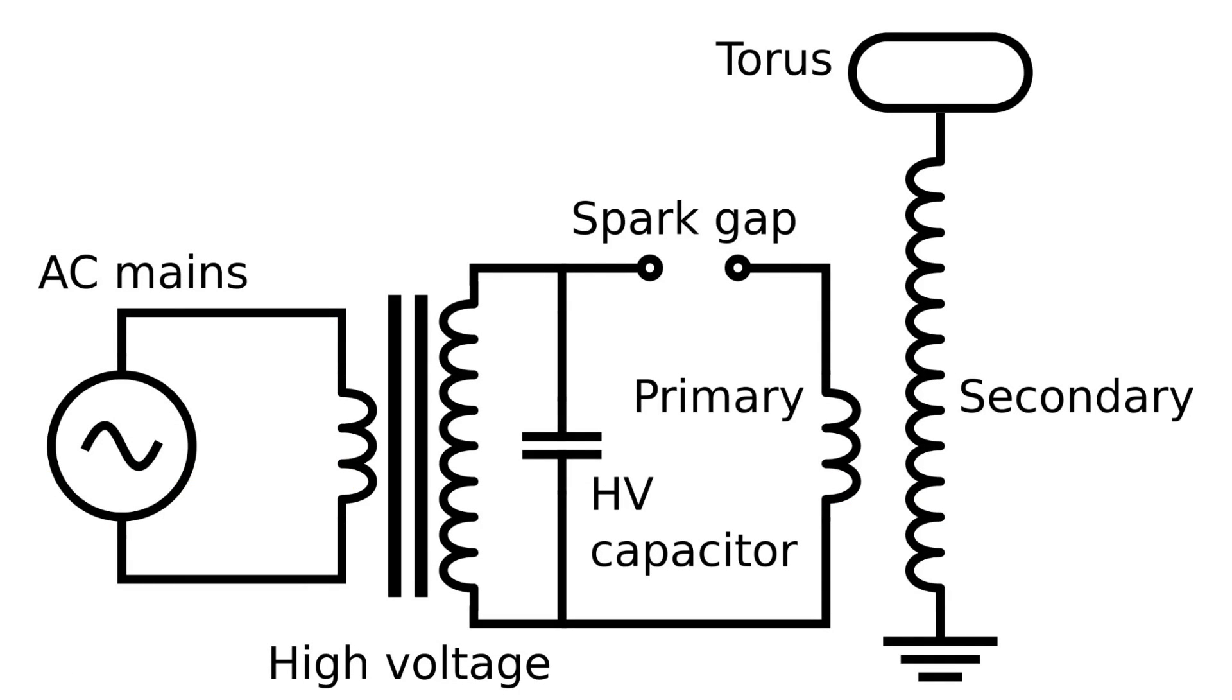This circuit diagram that I found on Wikipedia is very similar to the circuit that we're going to make. Except, instead of using AC mains and a high voltage transformer, we're going to use an electric fly swatter. Also, we don't need a capacitor. This circuit is designed to resonate well. This means that the electricity from the primary coil flows into the secondary coil very efficiently.